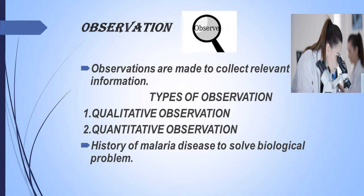We are going to investigate a lot of things. First, we observe a lot of things. After pointing out specific biological problems, observations are made to collect relevant information. For example, malaria was the one among many other diseases for which a cure was needed.